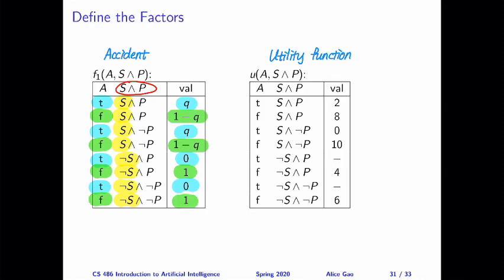So here for the right table, I basically took the utility function and moved it here. Except that I put all the numbers in the right place depending on the combination of values. So for example, the first value is when accident happens, we choose a short route and we wear a path. Our utility is 2.